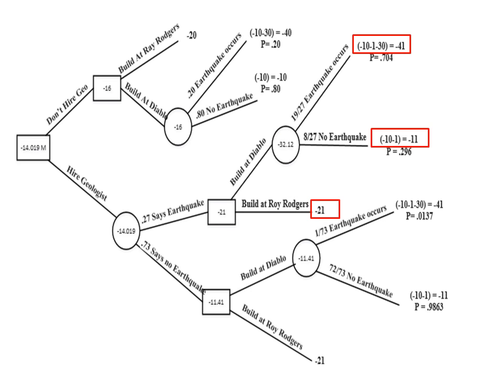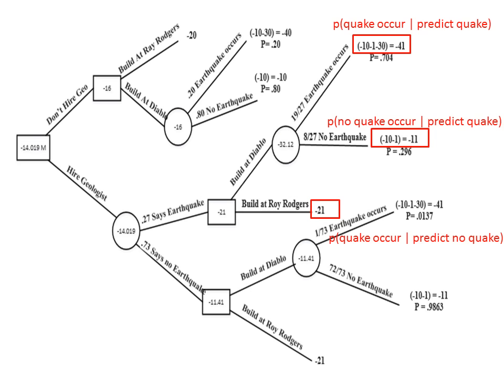Next, specify the probabilities associated with the branches. Write them first as conditional probabilities: for example, P(earthquake | prediction says earthquake), P(no earthquake | prediction says earthquake), P(earthquake | prediction says no earthquake), and P(no earthquake | prediction says no earthquake). Comparing these to the given probabilities in the problem, they are not equal — so you must use conditional probability (Bayes' theorem) to calculate their values.